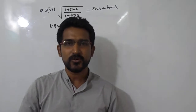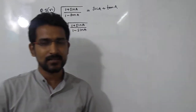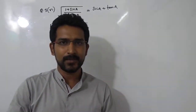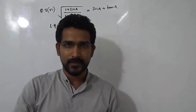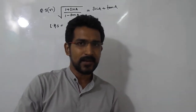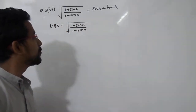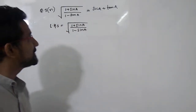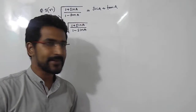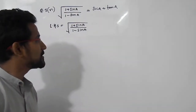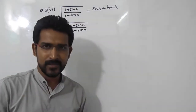Hello, so today in this session we are going to see the next sum, that is sub-question 6 of question number 5. In this we have to prove an identity that root of (1 plus sin A) divided by (1 minus sin A) is equals to sec A plus tan A.